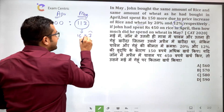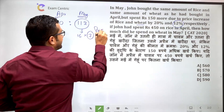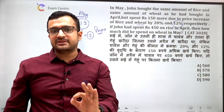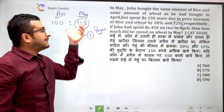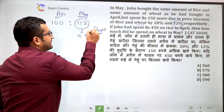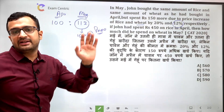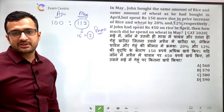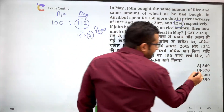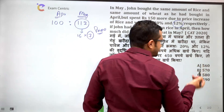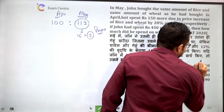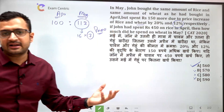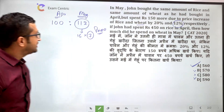The short trick: 7 is a prime number but 16 is not. With a 12% increase, the multiplier becomes 112%, and 112 has a factor of 7. So look at the answer options — the only multiple of 7 among them is 560, which is the right answer.